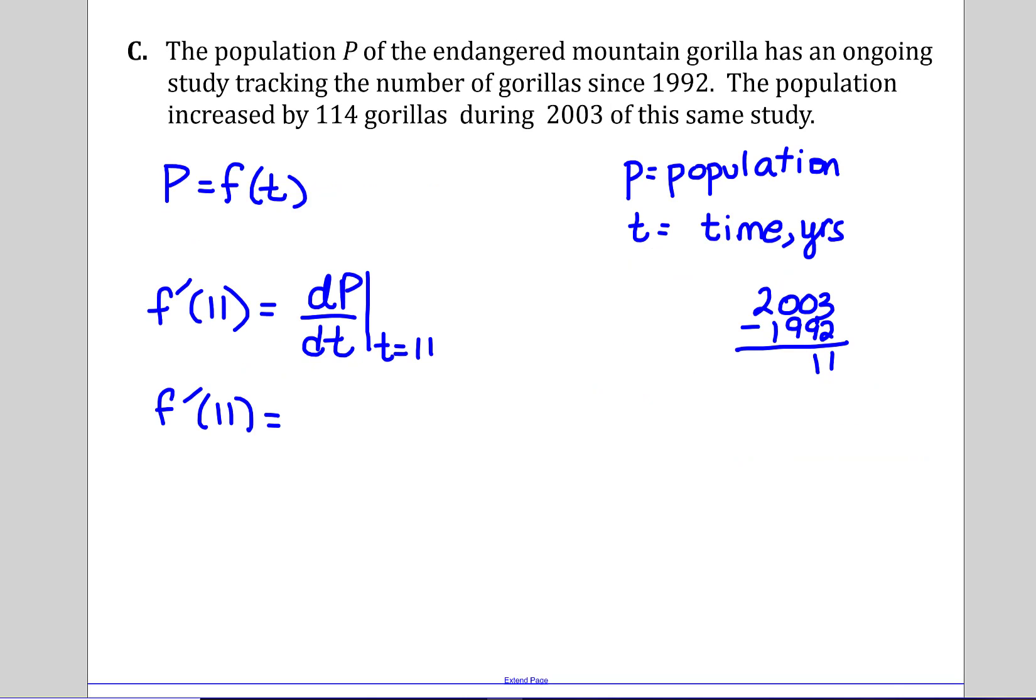On letter C we have a mountain population of an endangered gorilla, and they have an ongoing study tracking the number of gorillas. Since 1992, the population increased by 114 gorillas, so this is a positive rate of change during 2003. So we're going to name the function with variables P and t, so population is the number of gorillas and t is the time in years. So population is a function of time, and I figured out this is 11 years from 2003 back to 1992. So the rate of change, or our derivative at 11 years, is the rate of change of the population with respect to time such that time is 11, and it was positive so it's changing at 114 gorillas per year.